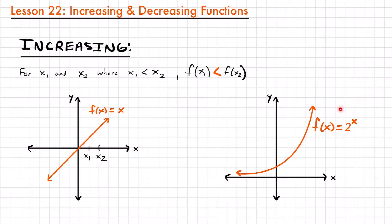The same is going to be true for this function over here — the exponential function f of x equals 2 to the power of x. As we pick larger values of x, we get larger values of y. As we go from left to right on our function, we are moving upward in the y direction.